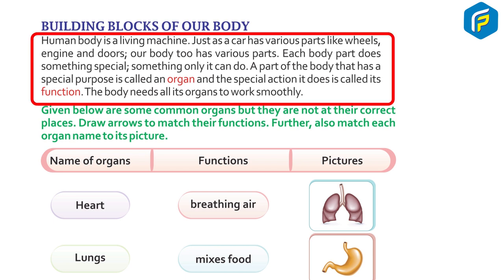The human body is a living machine. Just as a car has various parts like wheels, engine, and doors, our body too has many parts. Each body part does something special — something only it can do. A part of the body that has a special purpose is called an organ, and the special action it does is called its function.